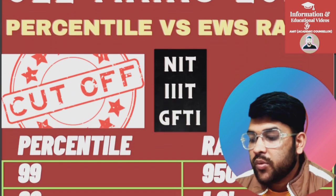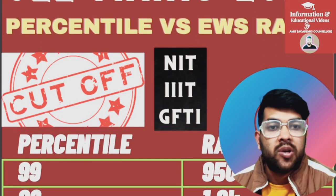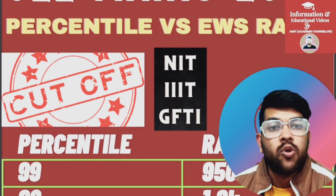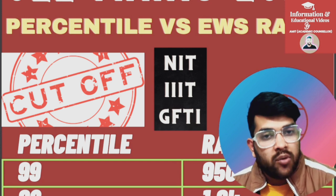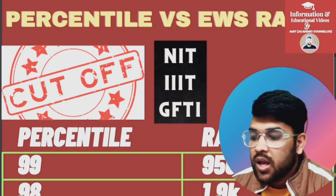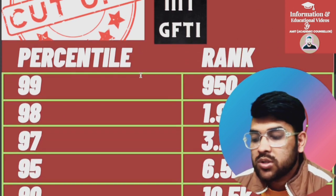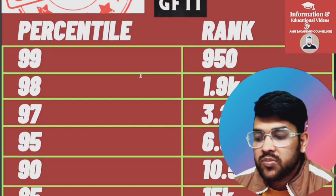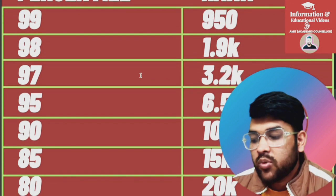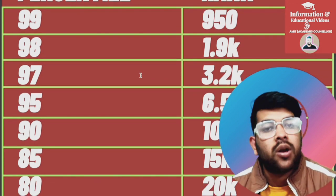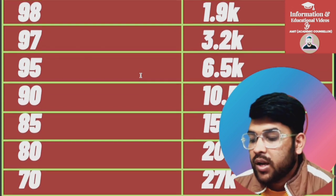Starting with the percentile-to-rank mapping for EWS category in JEE Mains: at 99 percentile your rank will be around 950. For JEE Advanced also I will provide a similar video soon. For 98 it is 1,900; for 97 it is 3,200; for 95 it is 6,500; for 90 it is 10,500; for 85 it is 15,000 or less.